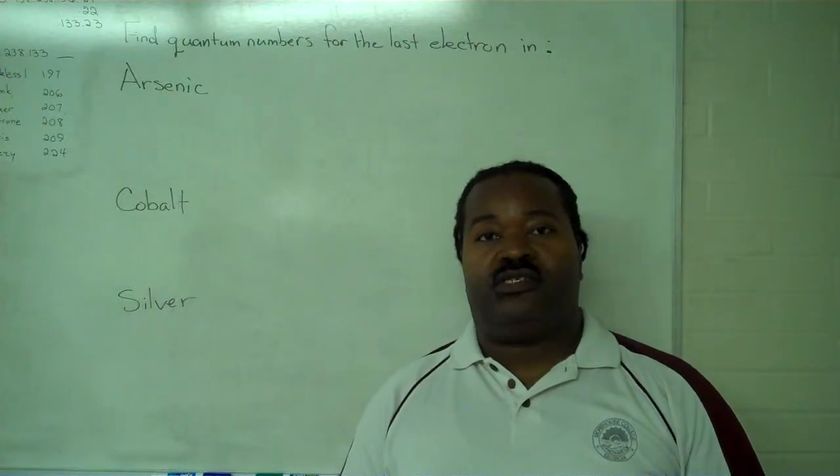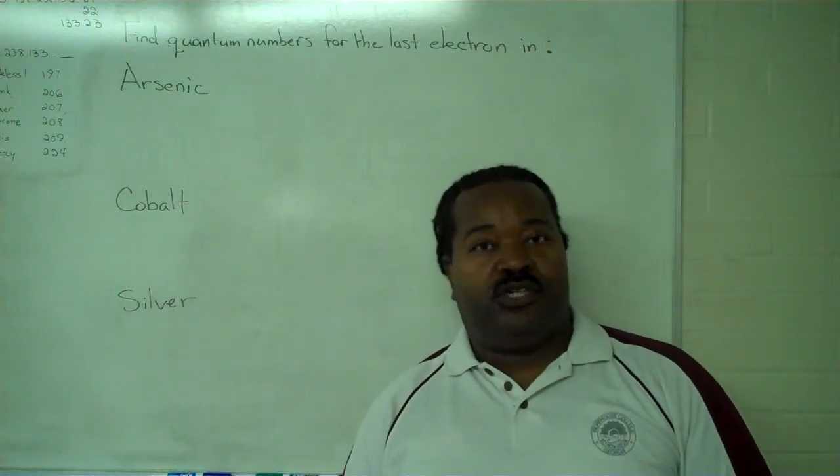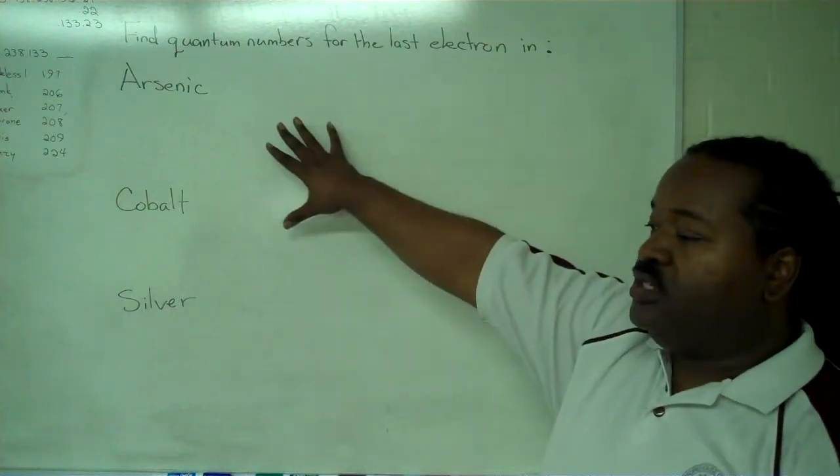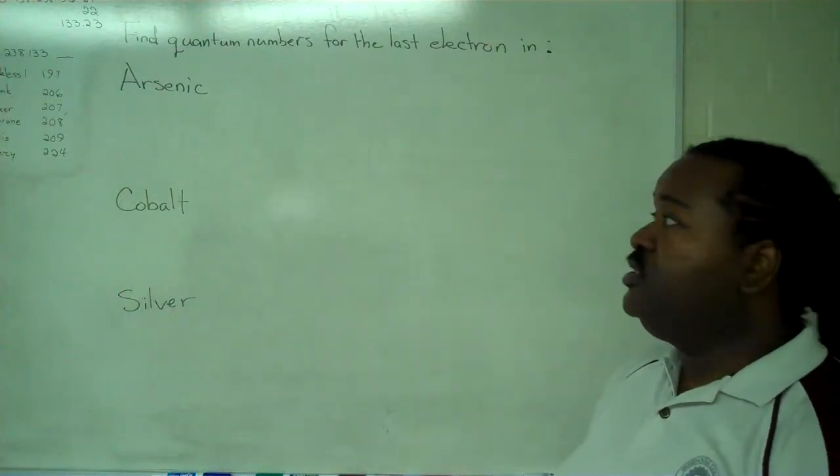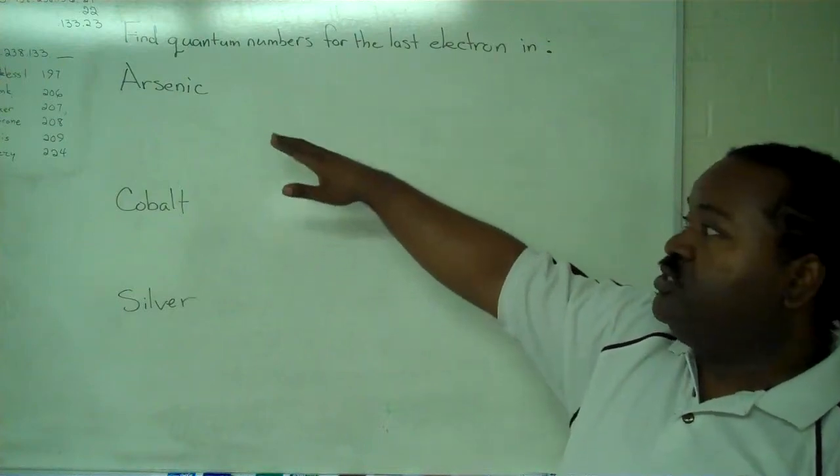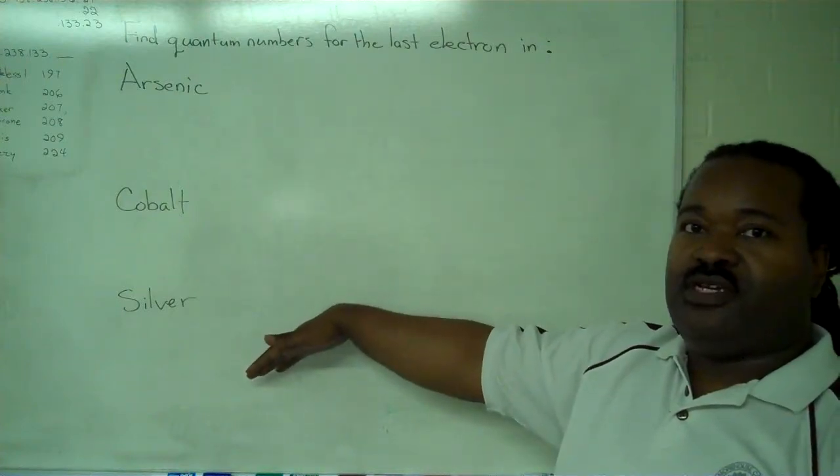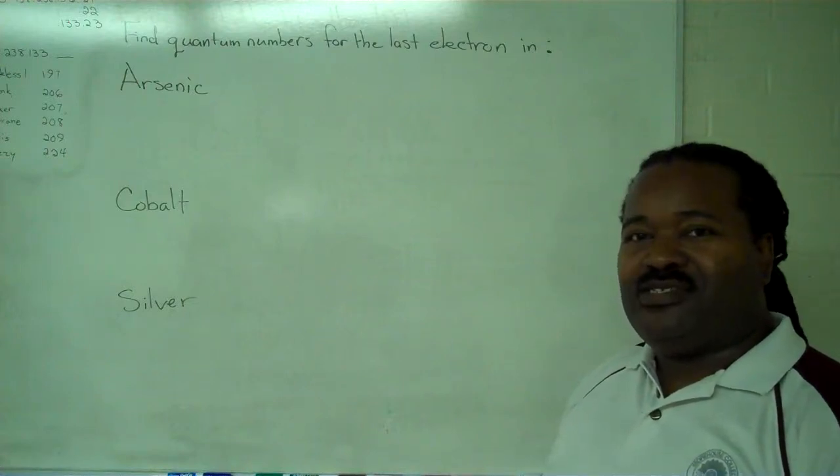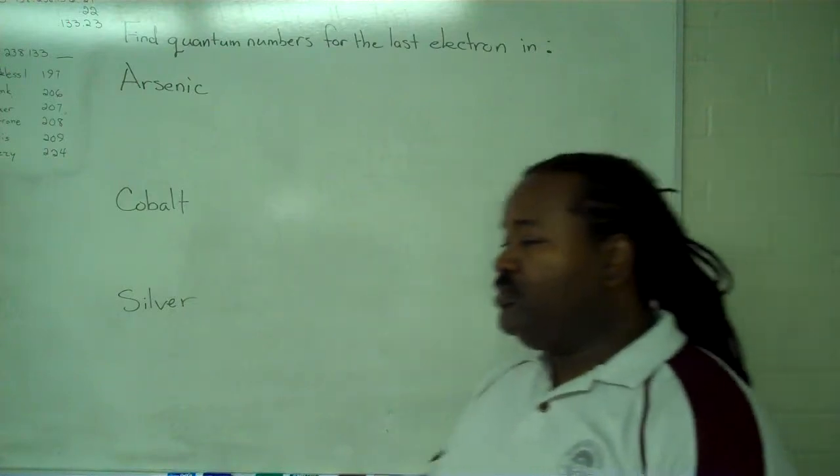This instructional video is designed to show you how to determine the quantum numbers of the last electron in an element, given its identity. In order to do this, you'll need not only the identity of the element you're looking at, which is given here, but also the periodic chart of elements so that you can look and count things up.